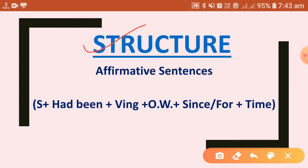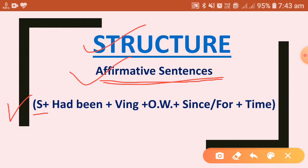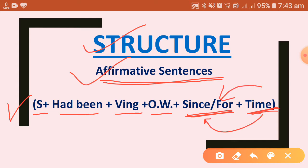Now we will see the structure, first the structure for affirmative sentences. For affirmative, the structure is: Subject + had been + main verb (ing form) + other words including object + since/for + time. The time will decide whether 'since' or 'for' is used. If the time is certain, then 'since' is used; if the time is uncertain, then 'for' is used.